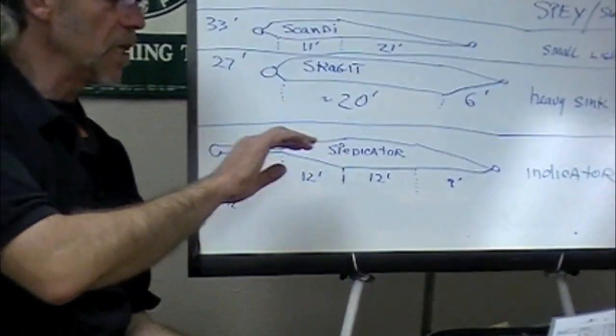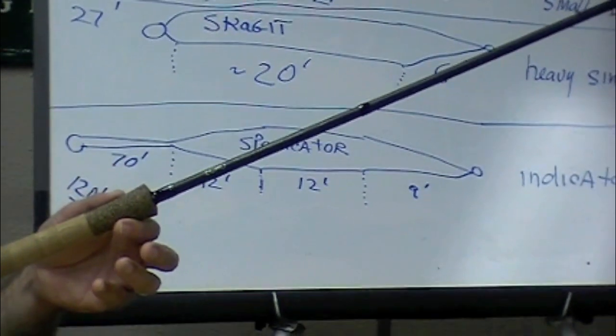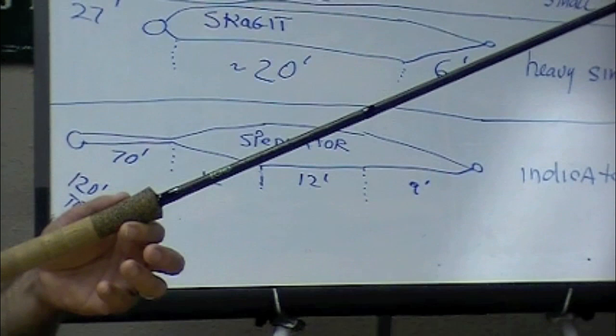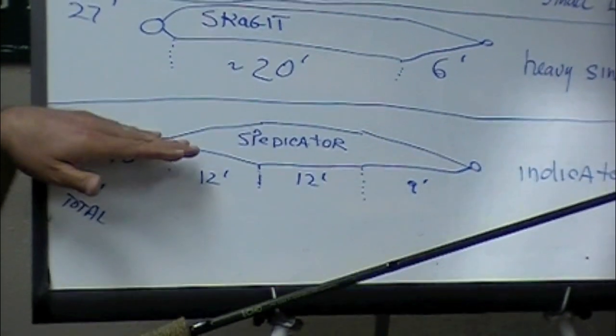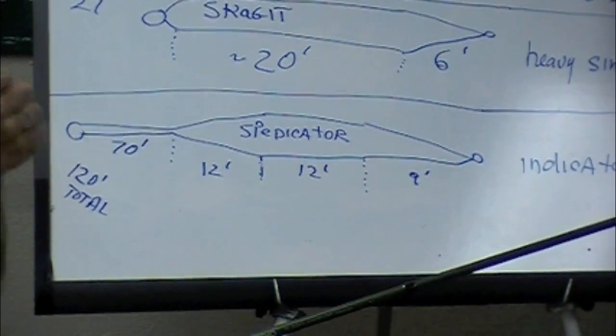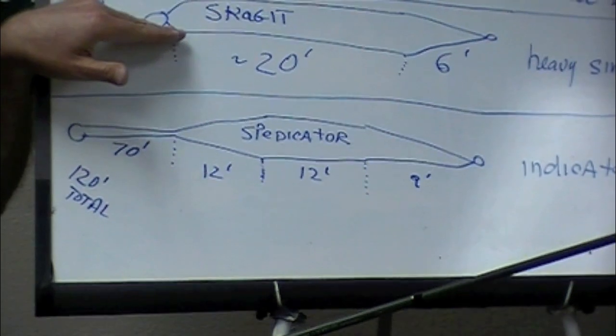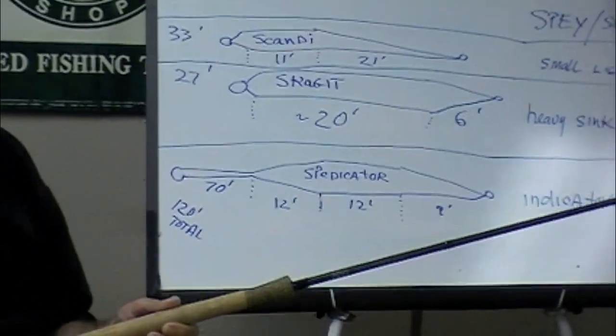When choosing line, if you've got a rod rated as a 7-weight, choose a 7-weight speydicator. Seriously, these lines perform much better than the Outbounds or the 40-pluses, and a lot better than the Skagits.